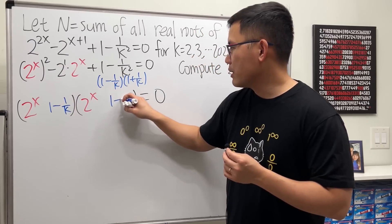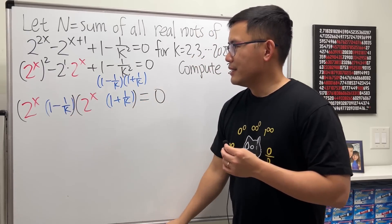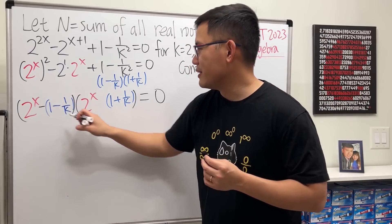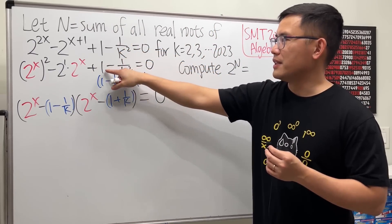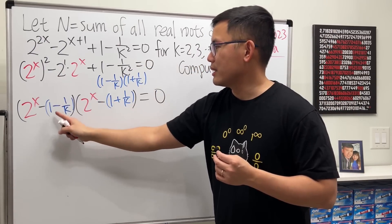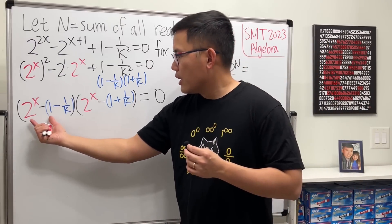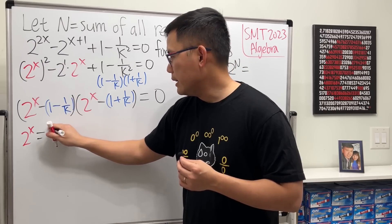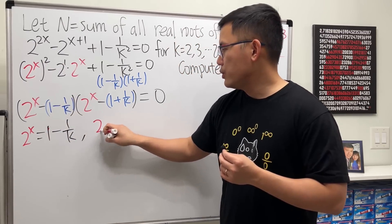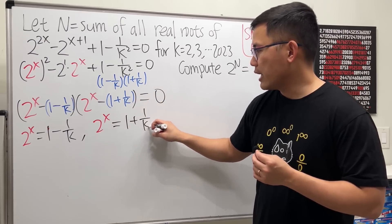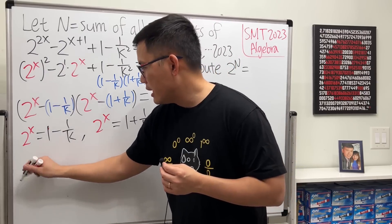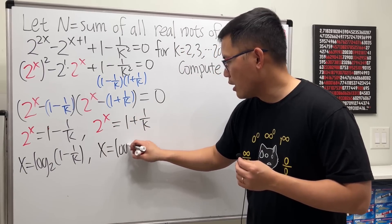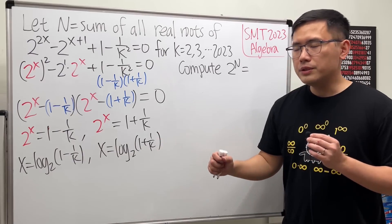The factors are (2^x minus (1 minus 1/k)) times (2^x minus (1 plus 1/k)). The middle term works out: the cross terms give negative two times 2^x, which matches. Setting each factor to zero, 2^x equals 1 minus 1/k and 2^x equals 1 plus 1/k. Taking log base 2 of both sides: x equals log₂(1 minus 1/k) and x equals log₂(1 plus 1/k). These are the two solutions for each equation.